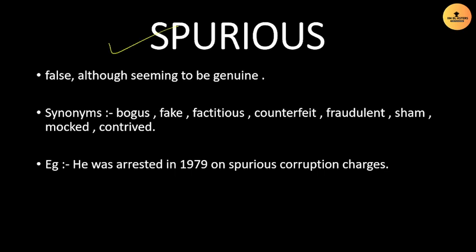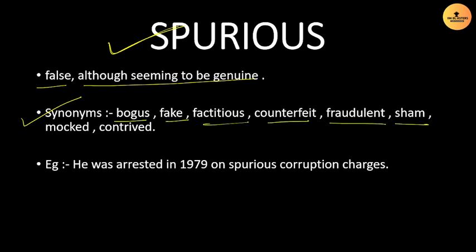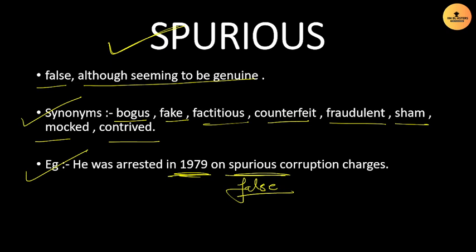Next word is 'Spurious' — meaning something that is false but seems to be genuine. Synonyms include bogus, factitious, counterfeit, fraudulent, sham, and mock. Example: 'He was arrested in 1979 on spurious corruption charges' — meaning false corruption charges. It is an important word to remember.